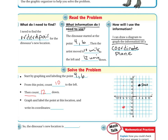I'll put my point right there. So the dinosaur's new location is right here. I go over to negative six and then down to negative six, so the new location coordinates are negative six, negative six. The dinosaur's new location is negative six, negative six.